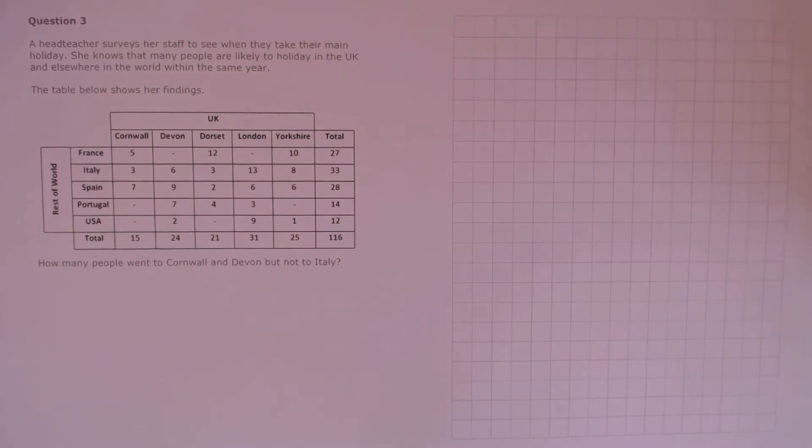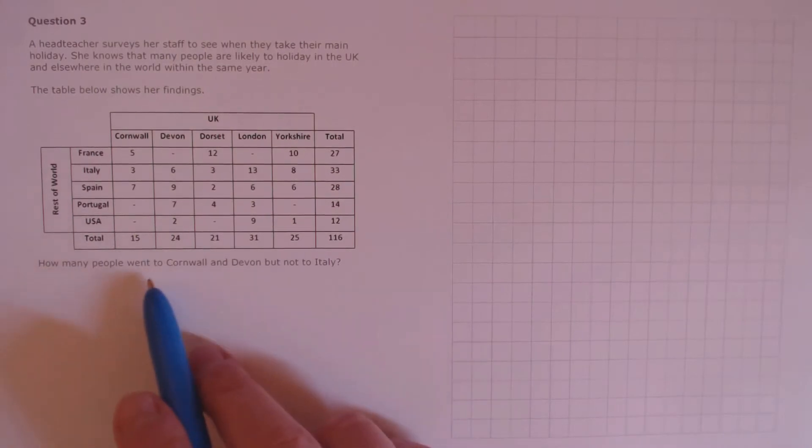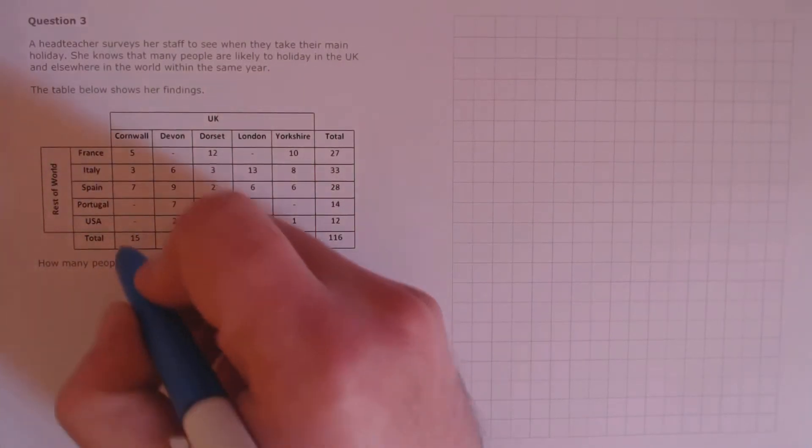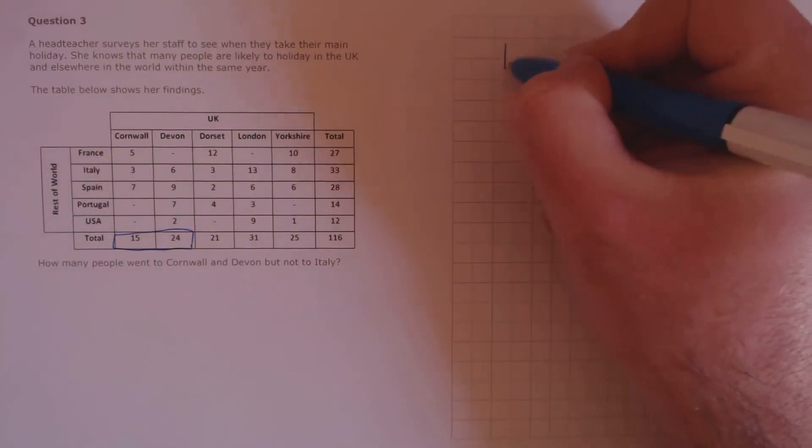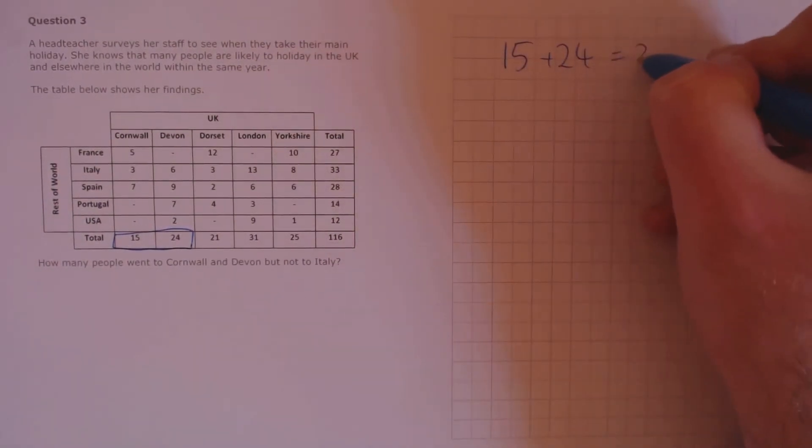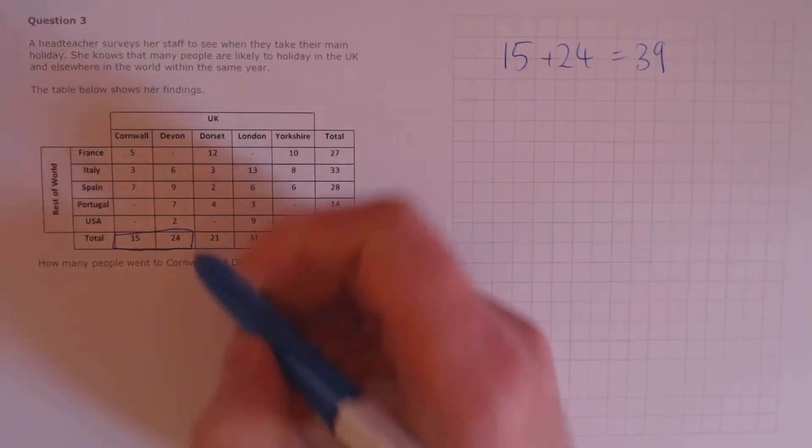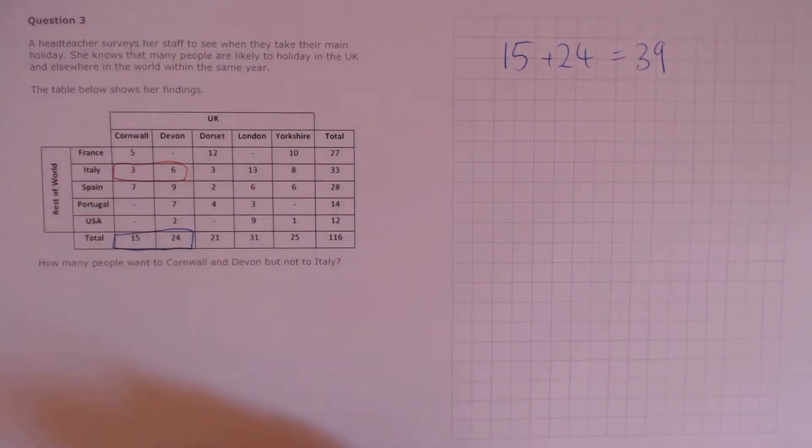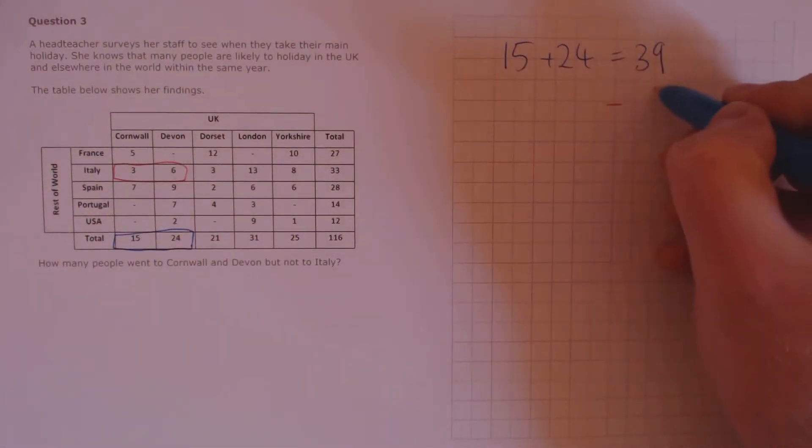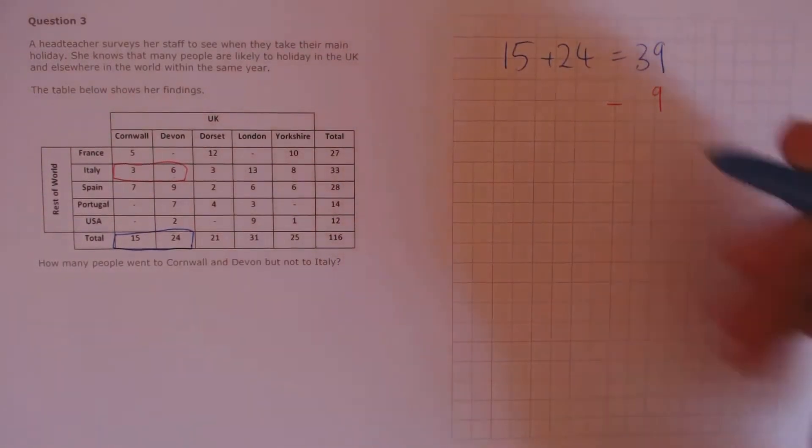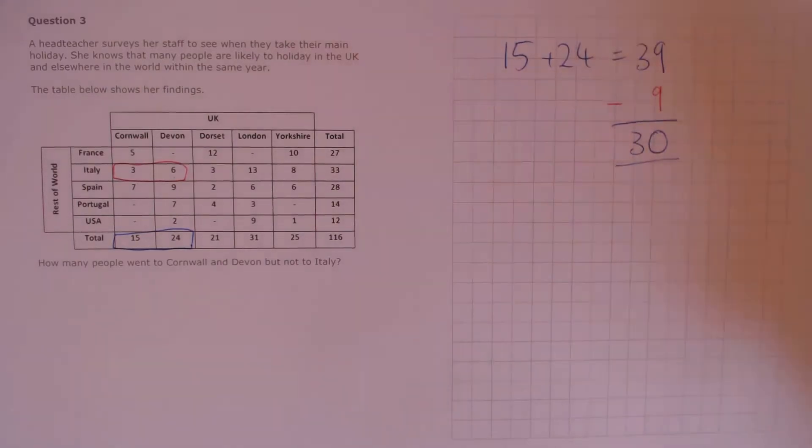Question 3. A headteacher surveys her staff to see when they take their main holiday. She knows that many people are likely to holiday in the UK and elsewhere in the world within the same year. The table below shows her findings. How many people went to Cornwall and Devon, but not to Italy? So first, we need the number of people that went to Cornwall and Devon in total. That's these two here. 15 plus 24 is 39 people. Next, we need to subtract the number of people that went to Italy. So that's 3 plus 6, that's 9. So we'll take away 9 and that gives us 30 people in total.